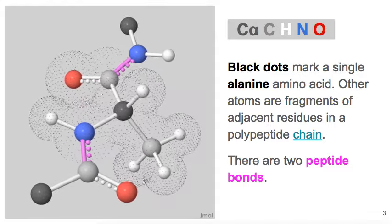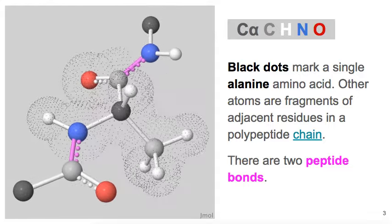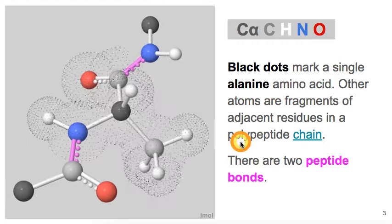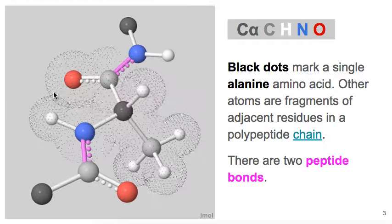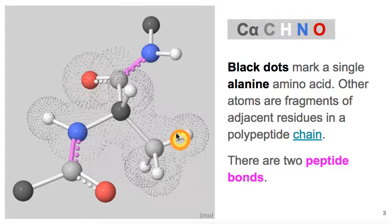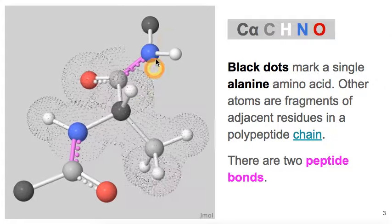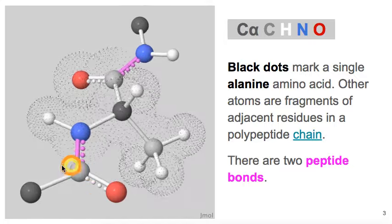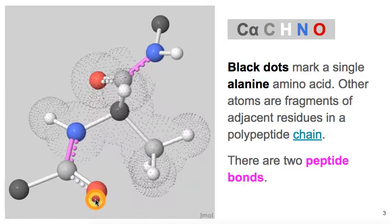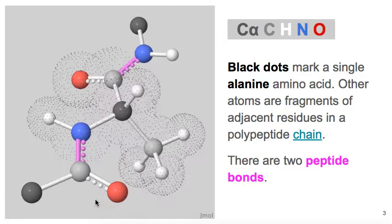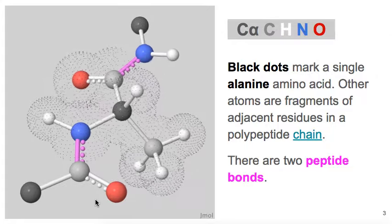In the center is a single complete alanine amino acid, all of whose atoms are marked by clouds of black dots. The atoms that are outside the black dots are fragments of adjacent amino acids that are connected to the central alanine in a polypeptide chain.